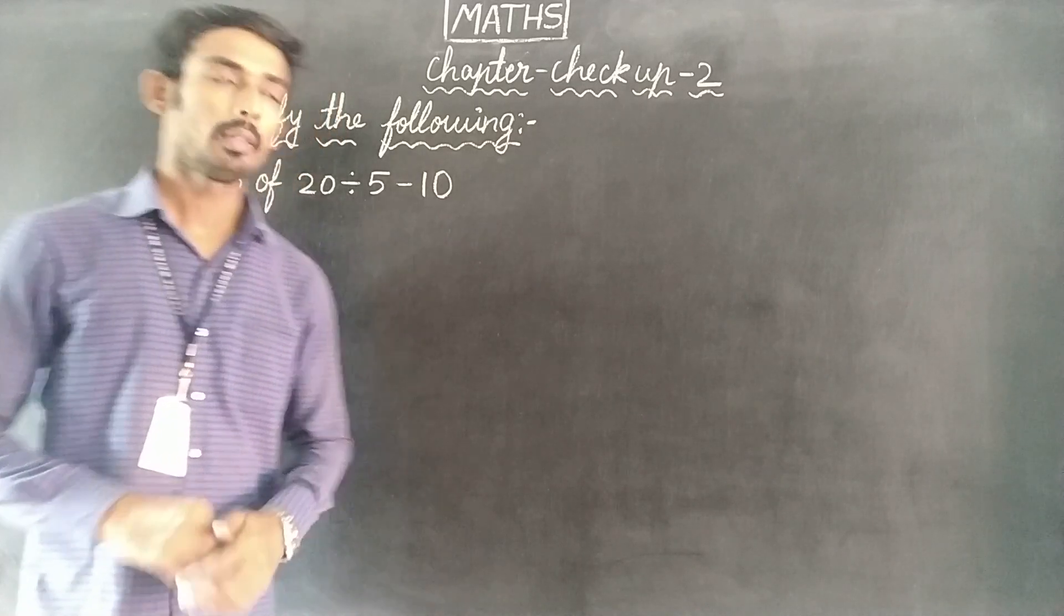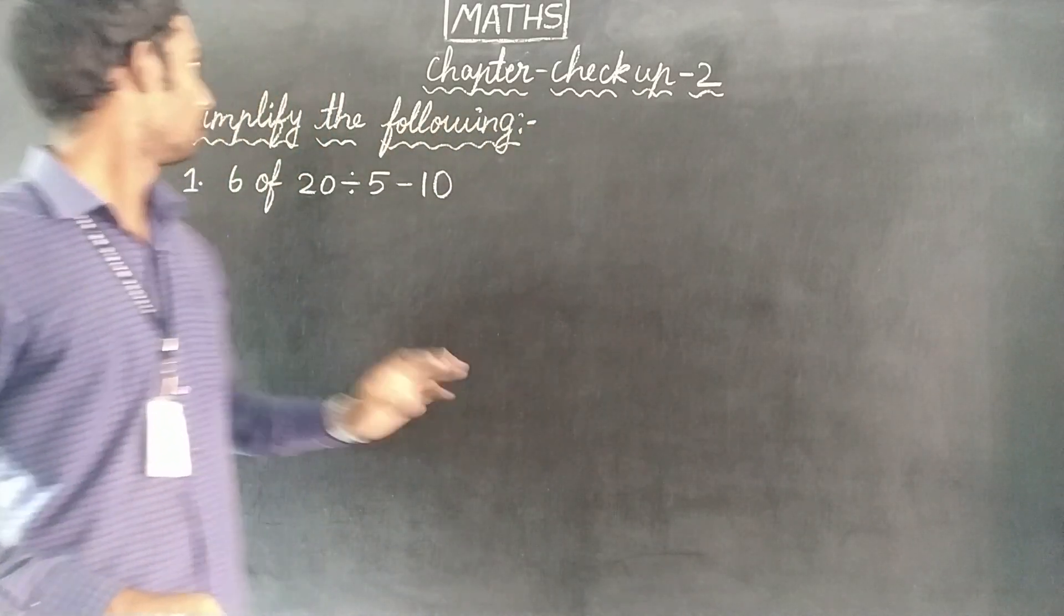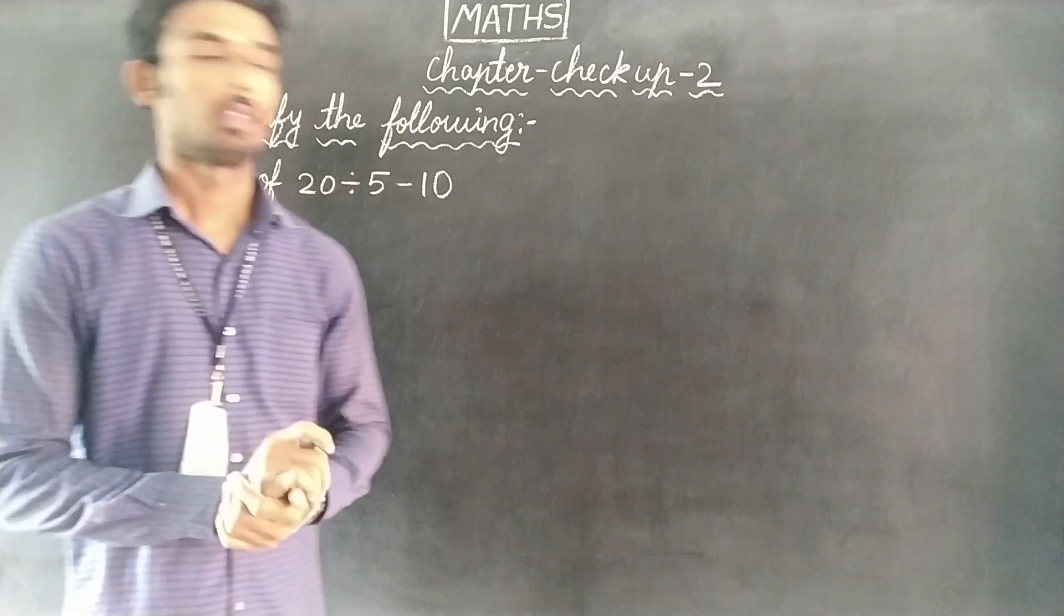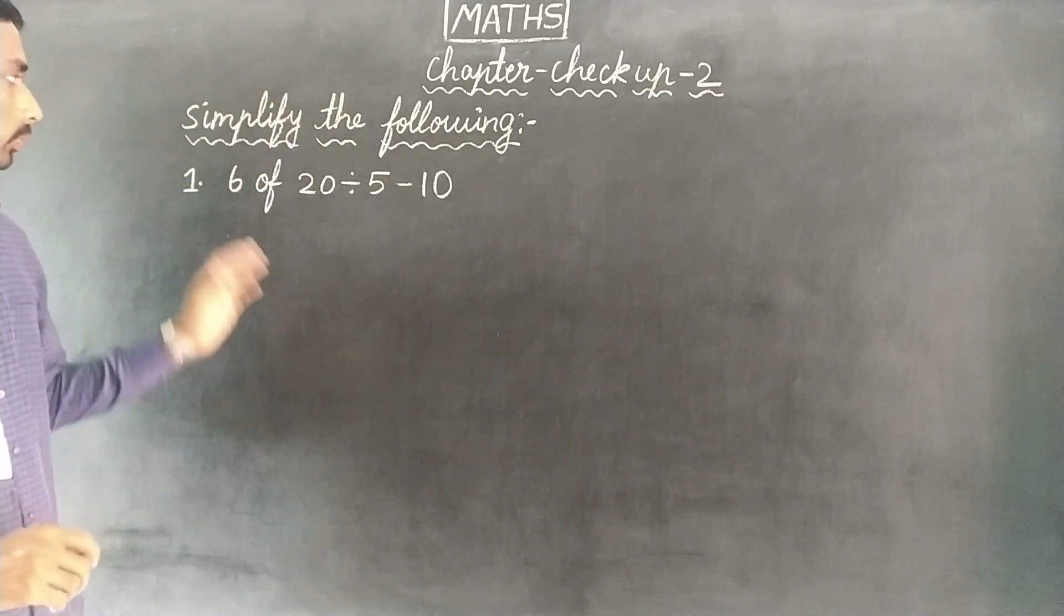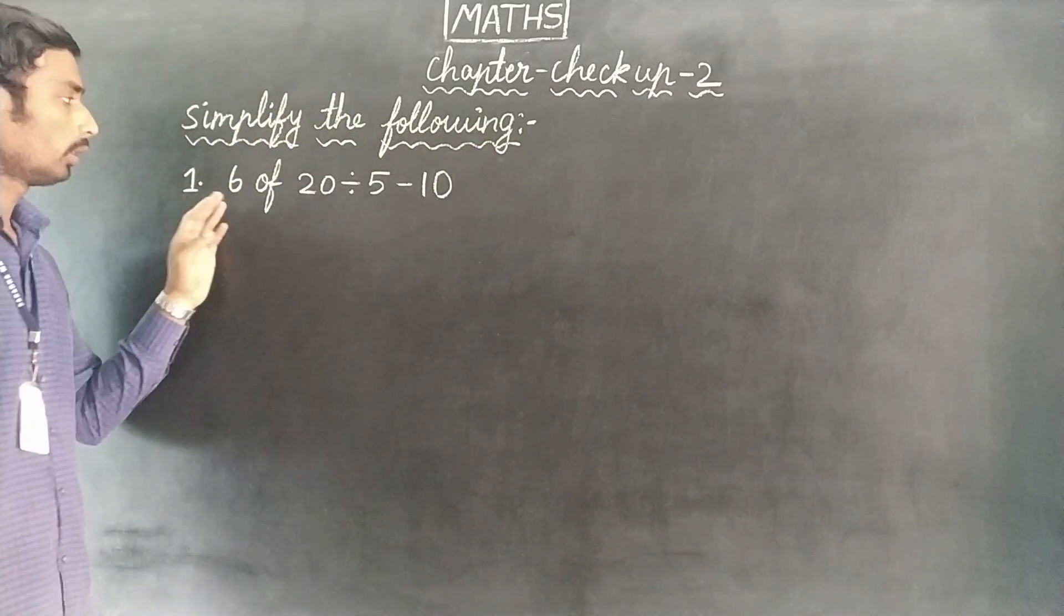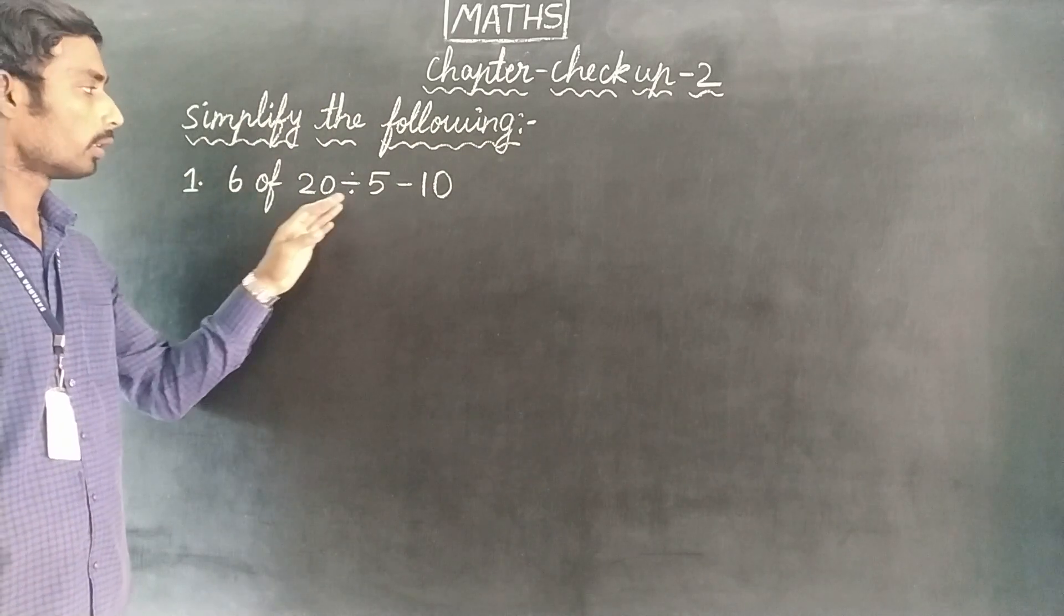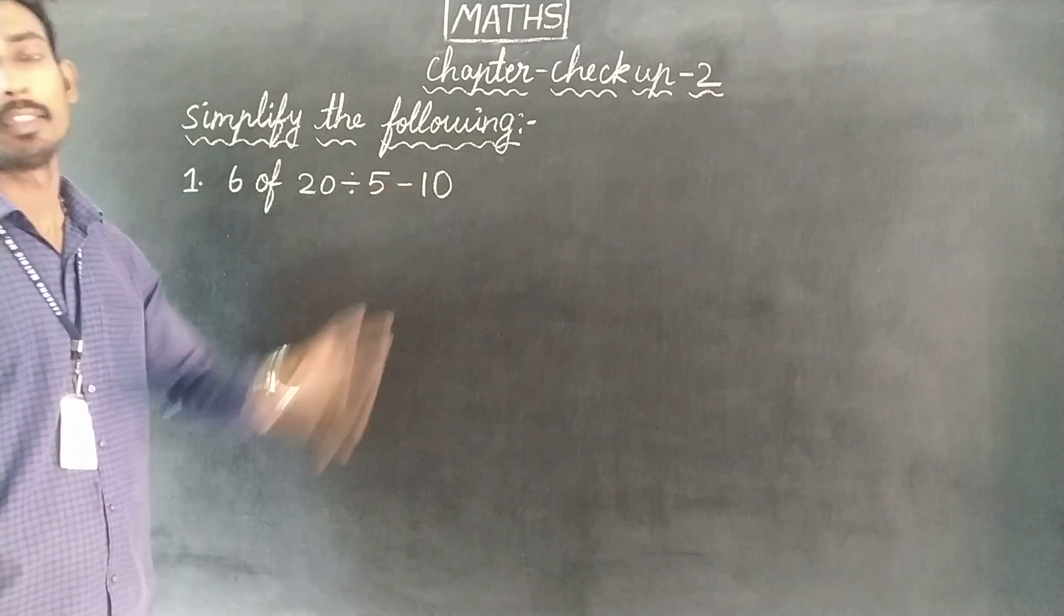Dear students, now we are going to simplify the following chapter 2. Simplify the following. First one: 6 of 20 divisible 5 minus 10.